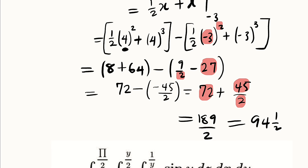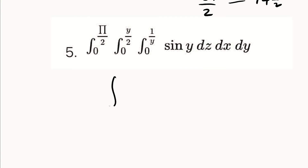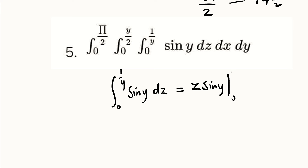Now let us take the last question. We have a function sin(y). We start with the integral over z from 0 to 1/y. Integrating sin(y) with respect to z simply multiplies by z, giving z·sin(y) from 0 to 1/y. Substituting z = 1/y, we get (1/y)·sin(y). The lower bound gives zero, so our new function is (sin y)/y, and we integrate with respect to x from 0 to y/2.